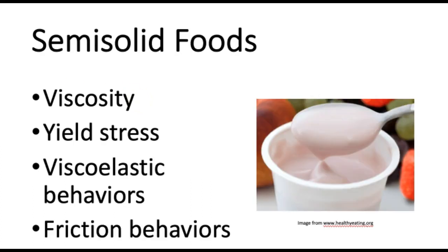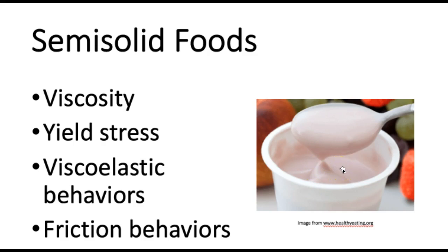If we look at semi-solid foods like yogurt — these are foods you can scoop, they may flow a little bit under their own weight but they're pretty thick. You can see this yogurt is making a little bit of a point as it's sliding off the spoon. They generally have a higher viscosity and a viscosity profile that differs when flowing at different shear rates or different speeds. So we can see how that viscosity changes with different rates, which might tell us something about how this food will feel when we put it in our mouth and move it around.